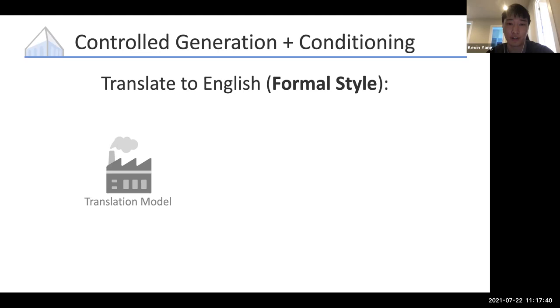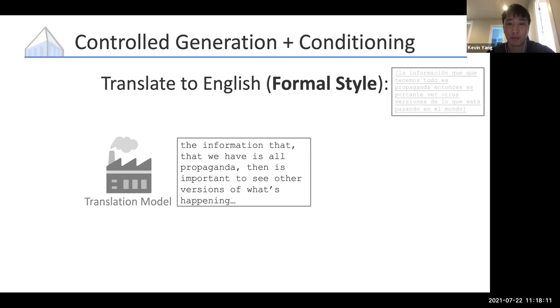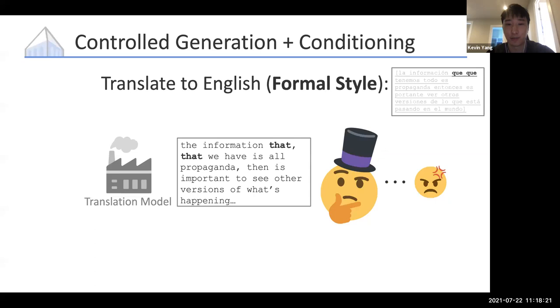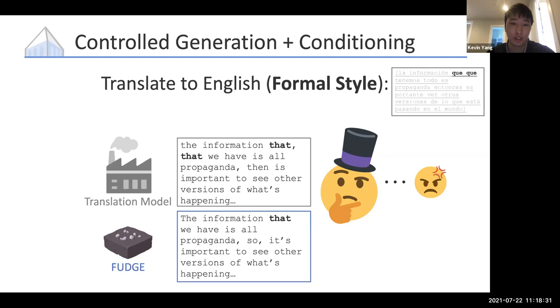Control generation makes sense in addition to the usual conditioning on input that you might see in translation or summarization. For example, if you're translating from Spanish to English, there's the input conditioned on the Spanish. But we could also impose an additional constraint that the output be formal — that's where controlled text generation comes in. During training you see the Spanish input, but you wouldn't usually also train for formal style. This is an additional constraint added at inference time. If you ask an off-the-shelf translation model, it'll get the meaning right, but it might copy some ungrammatical parts of the original Spanish — like repeated words. If you use a control text generation approach like FUDGE, you get a translation that preserves the meaning while also better matching the formal style.